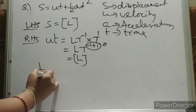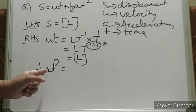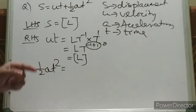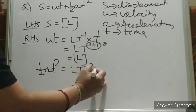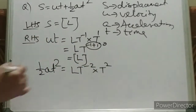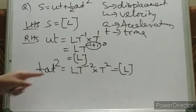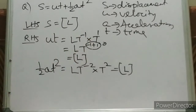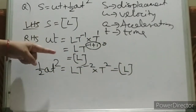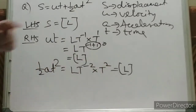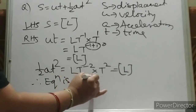Now, what is ½at²? Half is a number, so it has no dimension. We only need to find the dimension of A and T². Dimension of A (acceleration) is L T⁻², and T² is T². Multiplying: L T⁻²⁺² = L T⁰ = L. So LHS is L, the first RHS term is also L, and ½at² is also L. Therefore, the equation is correct.